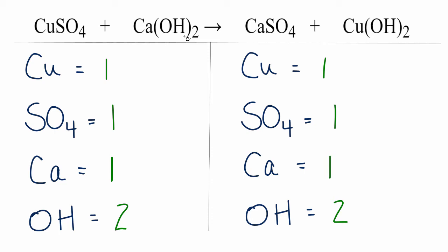For CuSO4 plus Ca(OH)2 yield CaSO4 plus Cu(OH)2. This is Dr. B, and thanks for watching.